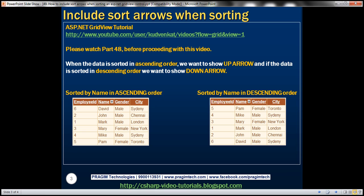When the data in the GridView control is sorted in ascending order, I want to display an up arrow next to the column by which the data is sorted. On the other hand, if the data is sorted in descending order, then we want to display a down arrow. In the first image, the up arrow next to the name column indicates ascending order, and the down arrow indicates descending order. Let's say you have to achieve this.